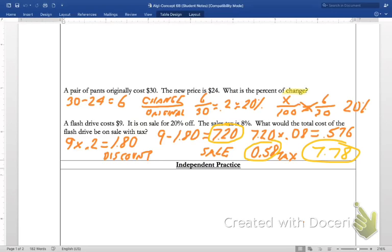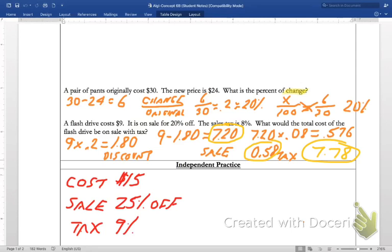I want you to try one of these because it's very important that you can do this. Here's your situation, and then pause the video, try it, and see if you match up as well. We've got this shirt, and the cost of the shirt is $15. It's on sale, it's a 25% off sale, and then tax is 9%. Pause the video, go ahead and see if you can figure this out, and I'll be back with you shortly.